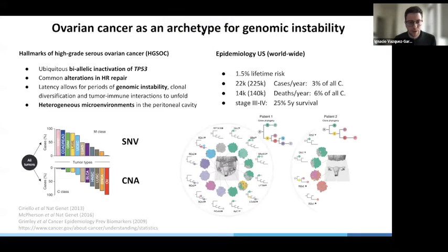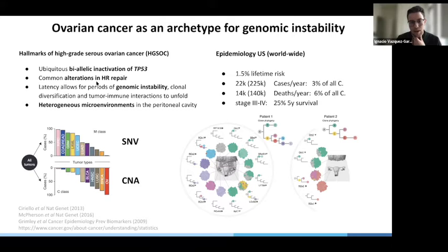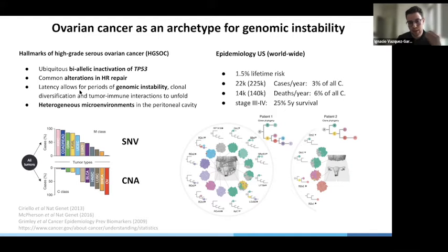I'll give you the overview of what the main hallmarks are of high-grade serous ovarian cancer. It's defined by ubiquitous biallelic inactivation of TP53, and common mutations, both germline and somatic, in BRCA1, BRCA2, and other HR-related genes. This disease tends to be detected rather late, which allows for long latency, long periods of genomic instability, clonal diversification, and allows also for tumor-immune interactions to unfold. All of this is happening in the highly heterogeneous microenvironments of the peritoneal cavity.